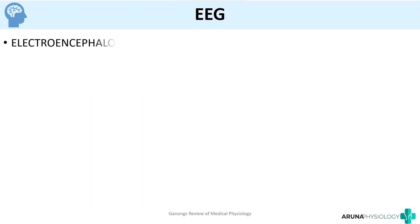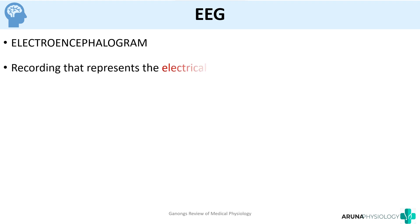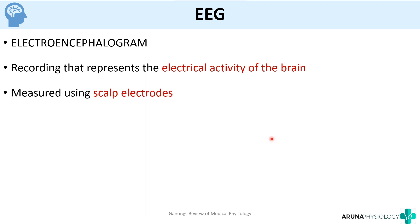So what is meant by EEG? EEG or electroencephalogram is a recording that represents the electrical activity of the brain, and it is measured using scalp electrodes.